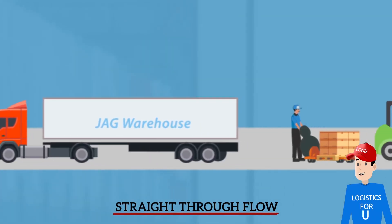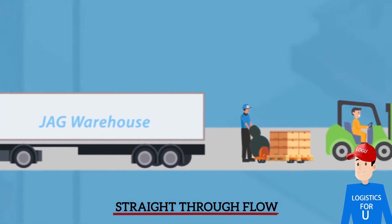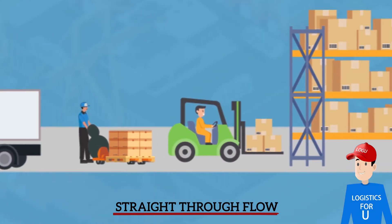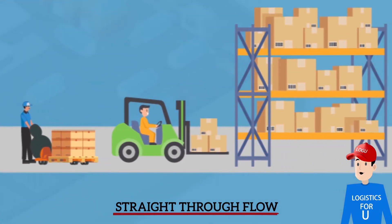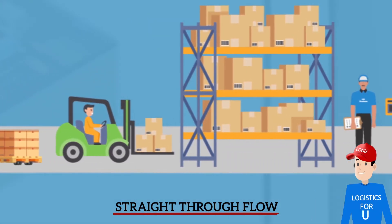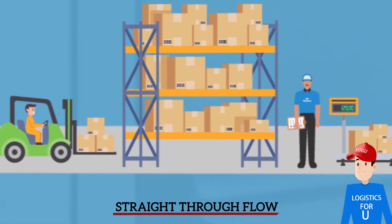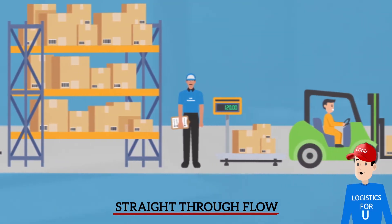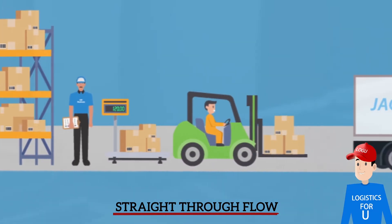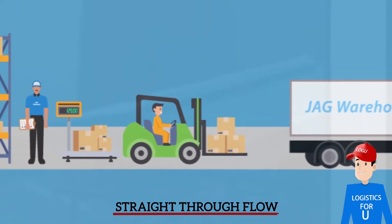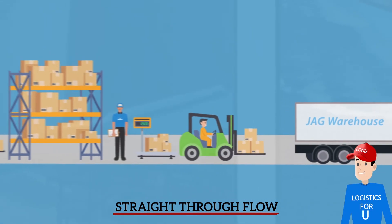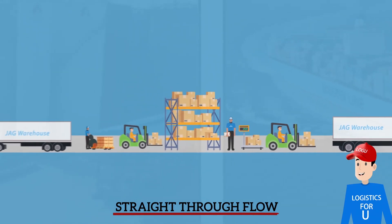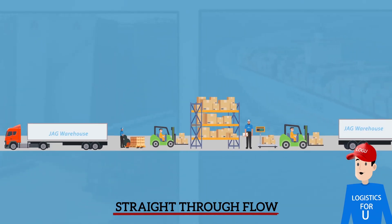Straight through: This has separate bays for inbound and shipping. Products flow in a straight line from receiving to storage, picking, and then dispatch. High-valued items are stored in a central location to reduce the total traveling time.